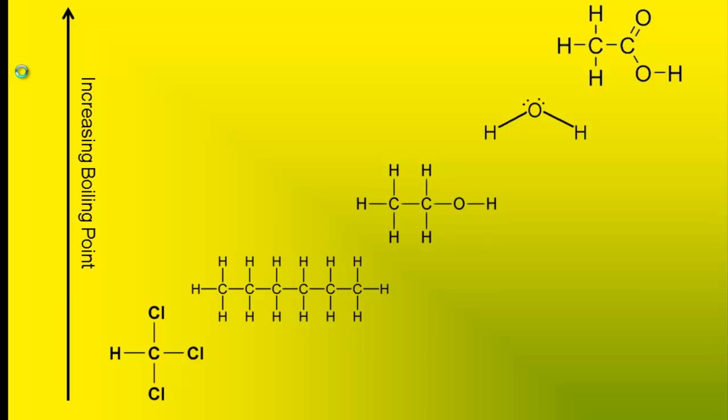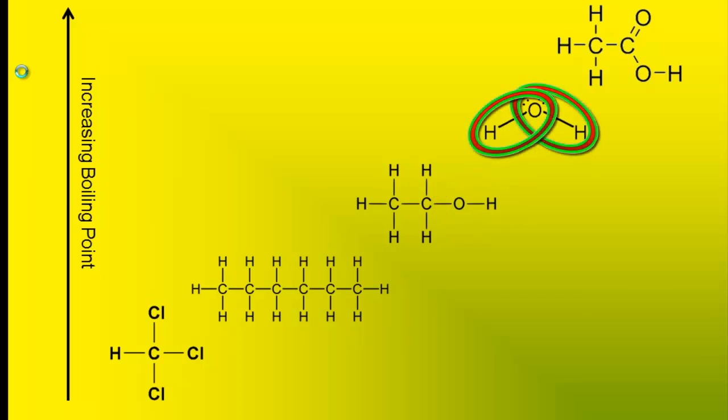The third compound on this list is ethanol. Ethanol is a smaller molecule than hexane, but it has a higher boiling point. The primary reason why ethanol has a higher boiling point is that it can engage in hydrogen bonding. Water, like ethanol, can also engage in hydrogen bonding. Water is the lightest molecule, but it can engage in hydrogen bonding twice.